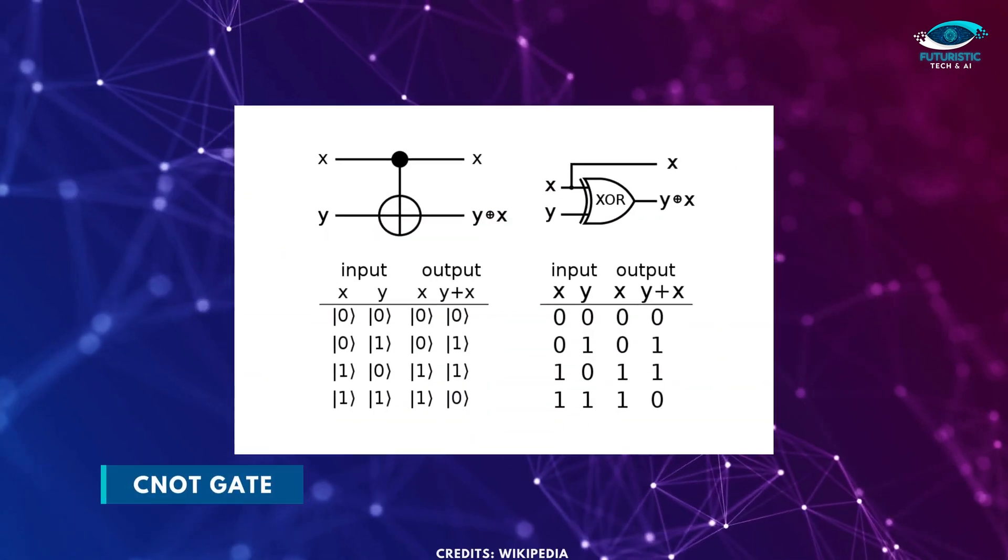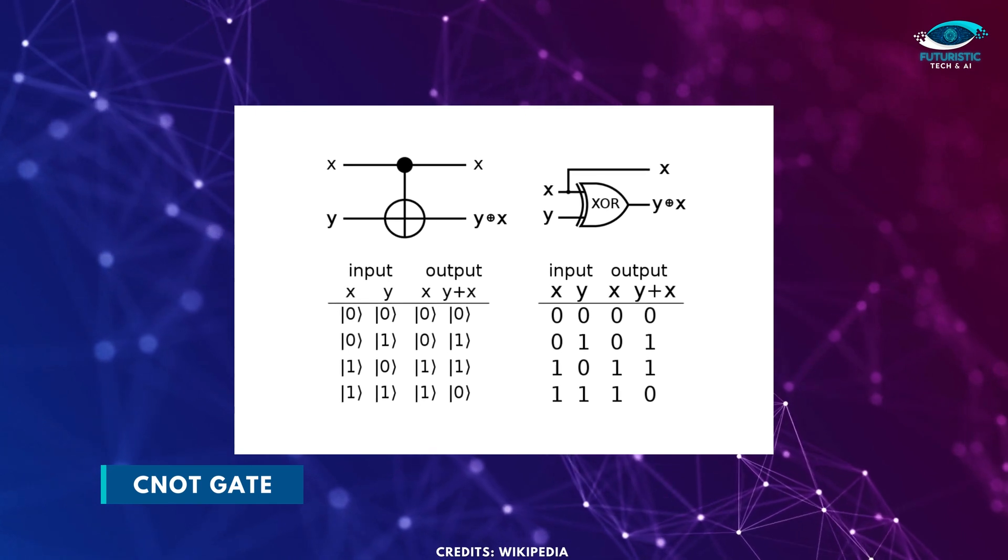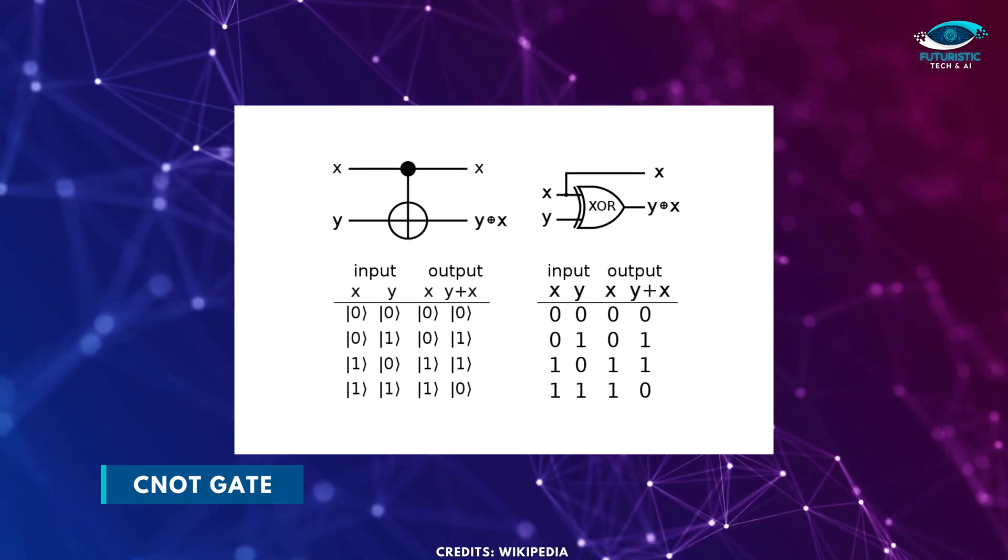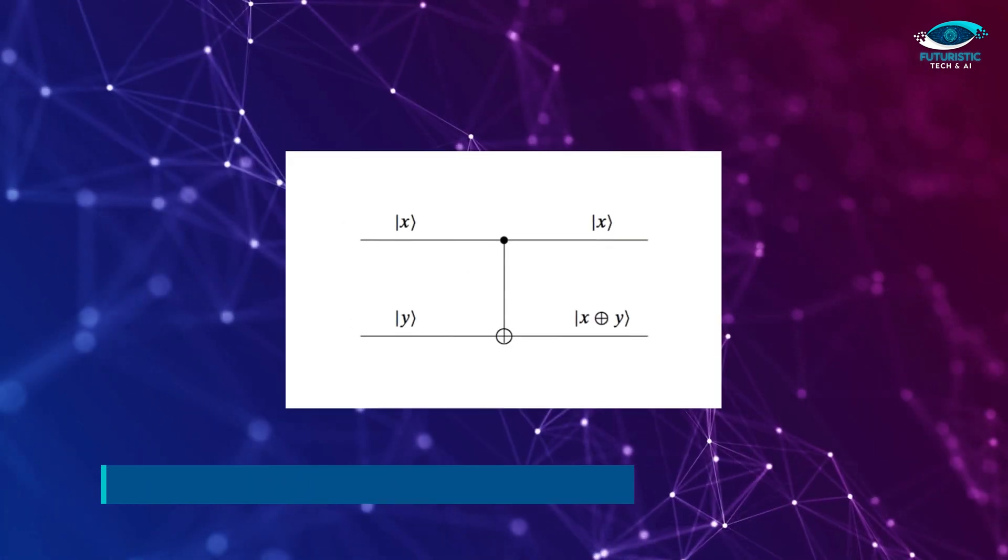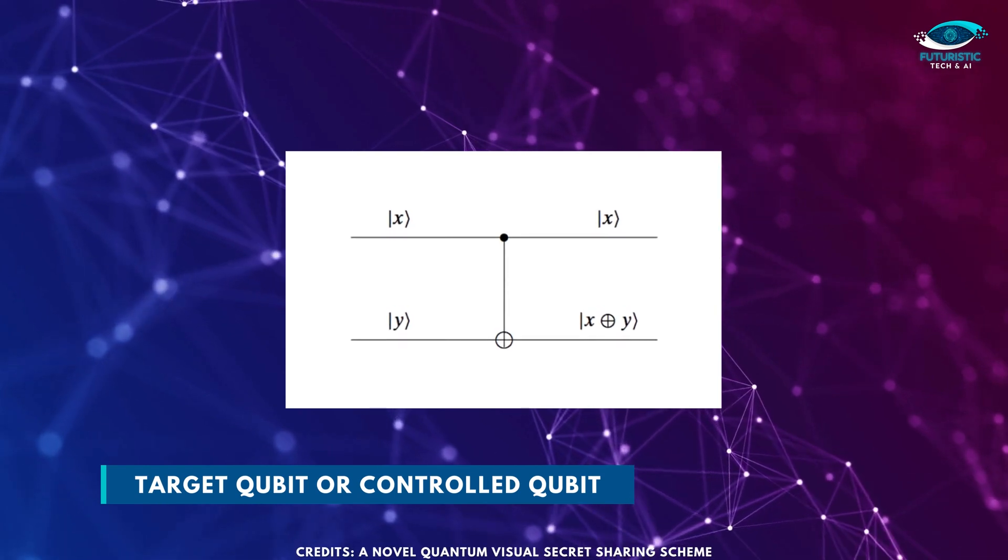The CNOT gate is an example of a two-qubit operation, where the first qubit is usually referred to as the control qubit, and the second qubit as the target qubit or controlled qubit.